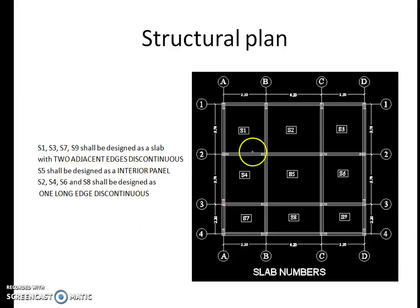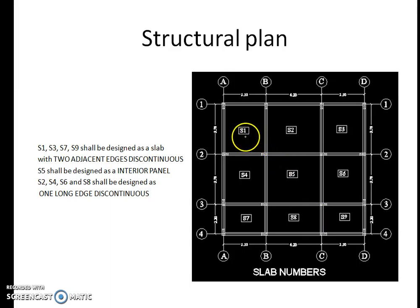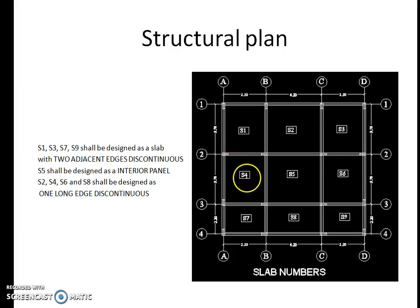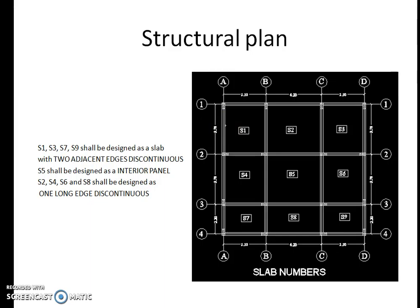Looking at the structural plan, you can see there are many slabs numbered S1, S2, S3, and so on. Slab S1 has different boundary conditions — for example, one edge is continuous with slab S2, another edge is continuous with slab S3, whereas two other edges are discontinuous. So slab S1 has a boundary condition with two adjacent edges discontinuous.